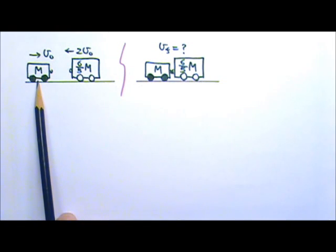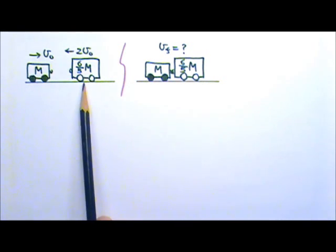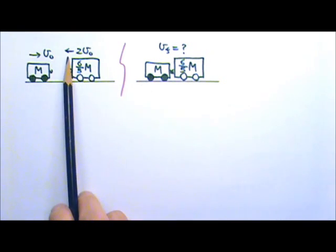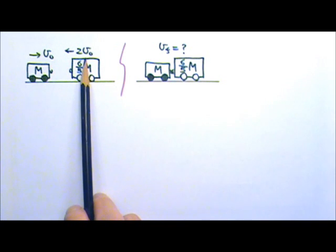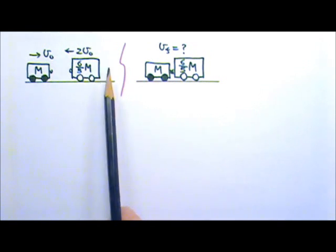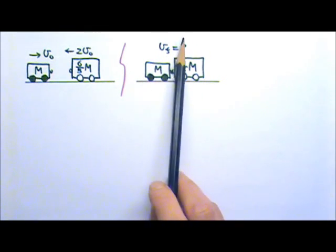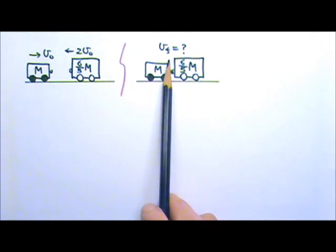A cart with mass m traveling to the right at a speed VO collides with a second cart traveling to the left at a speed of twice the VO. If the second cart has a mass of 6 fifths times m and the two carts couple together as a result of the collision, find their final velocity at the end of the collision.